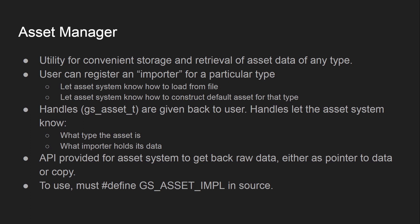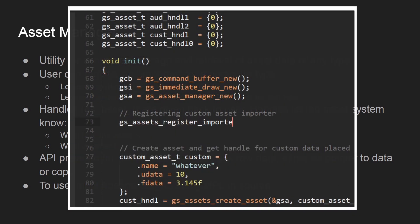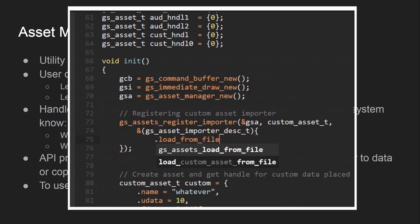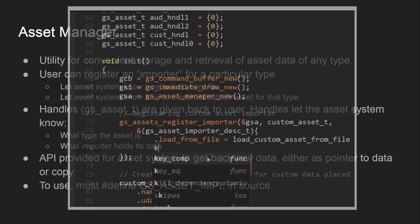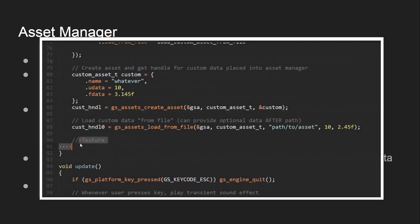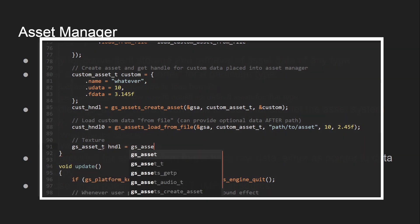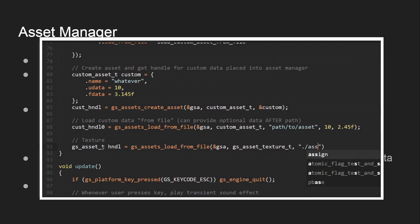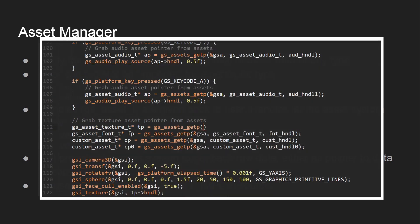The asset manager is an optional utility on top of the core framework for convenient storage and retrieval of asset data of any type. Upon creation, the user can register an importer for a particular type, which tells the asset system how to load the asset from file, how to construct a default asset of that type, and acts as storage for the asset data. When you create an asset, a handle in the form of a gs_asset is returned. These handles contain a uint64 key for the asset type and tell the asset manager which importer holds the data. An API is provided to get back the raw data as a pointer or as a copy.